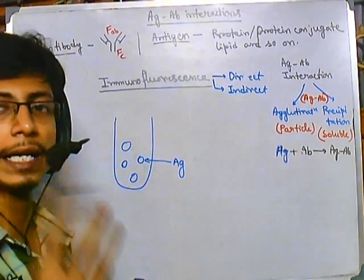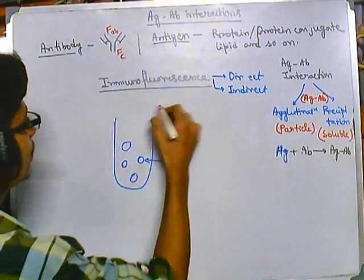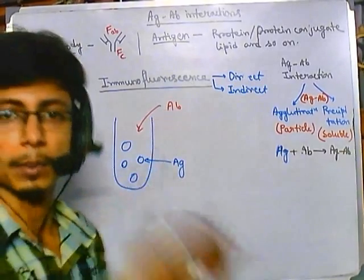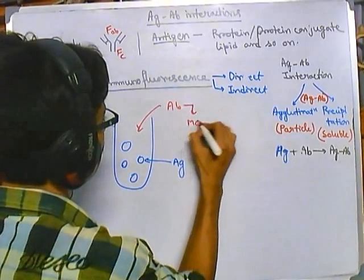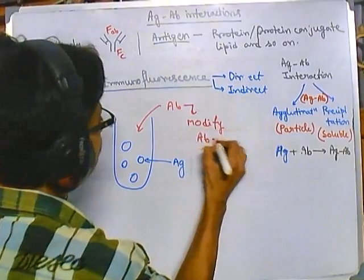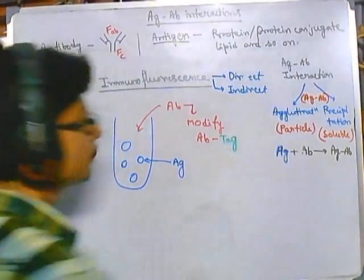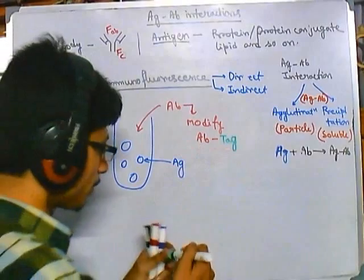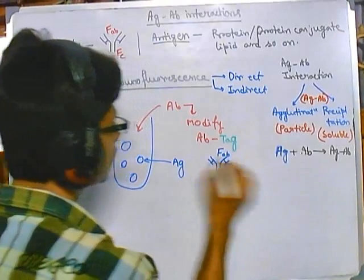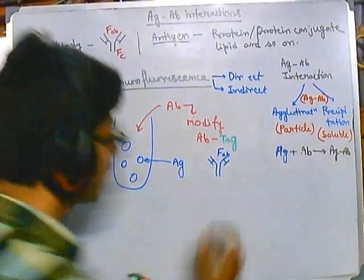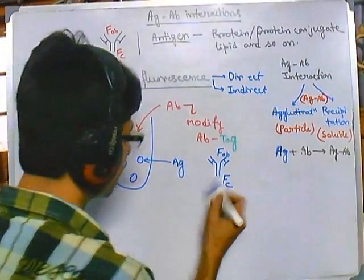So we will add antibodies into this mixture. We can modify this antibody — it is conjugated with any kind of fluorophore molecule, so it is tagged with a fluorophore. If you remember the structure of antibodies, it has an FAB region which interacts with the antigen, and an FC region which does not interact with the antigen. If we tag this FC region with a fluorophore — say a red-colored fluorophore — it will emit red-colored fluorescence.